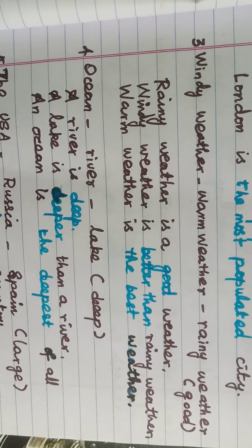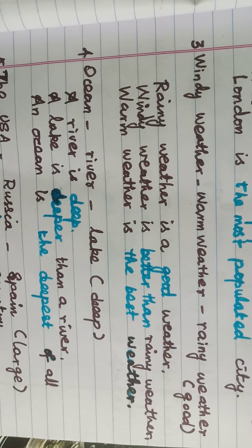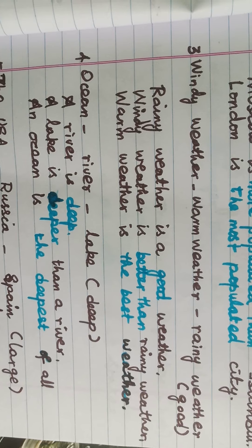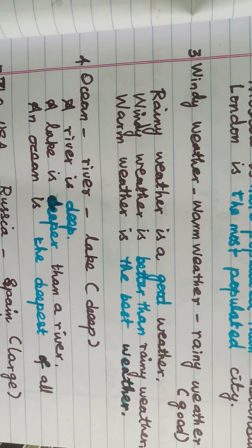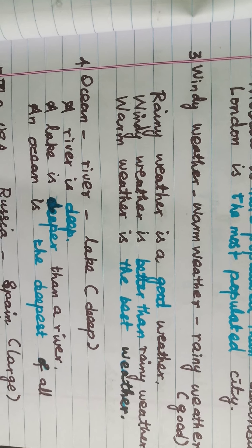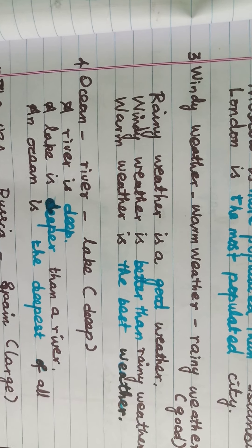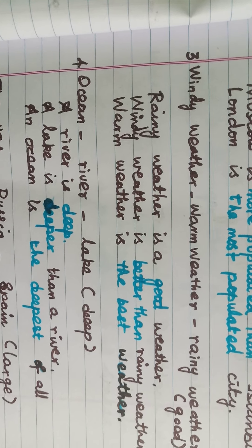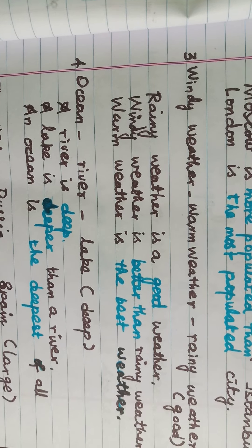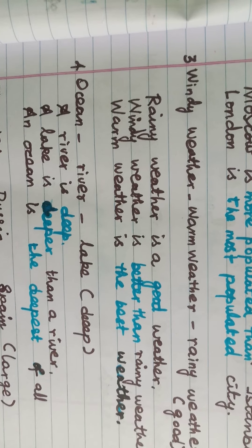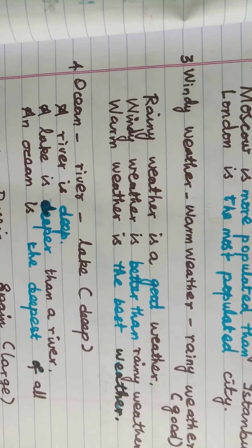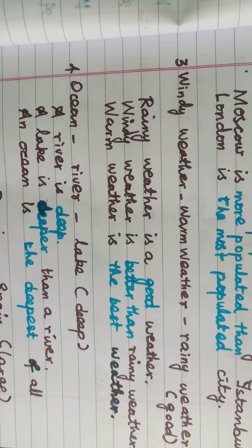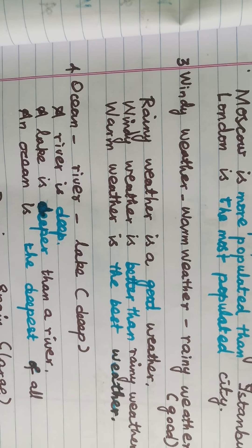Ocean, river, lake. Which is the deepest of all? A river is deep — positive degree. A lake is deeper than a river — comparative degree. An ocean is the deepest of all — superlative degree.